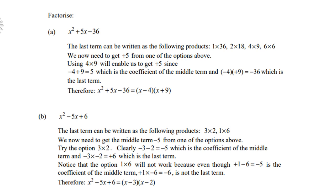Let's look at b. x² - 5x + 6. The last term can be written as the following products: 3 times 2 and 1 times 6. We now need to get the middle term, which is a negative 5, from one of the options above. So try the option 3 times 2.